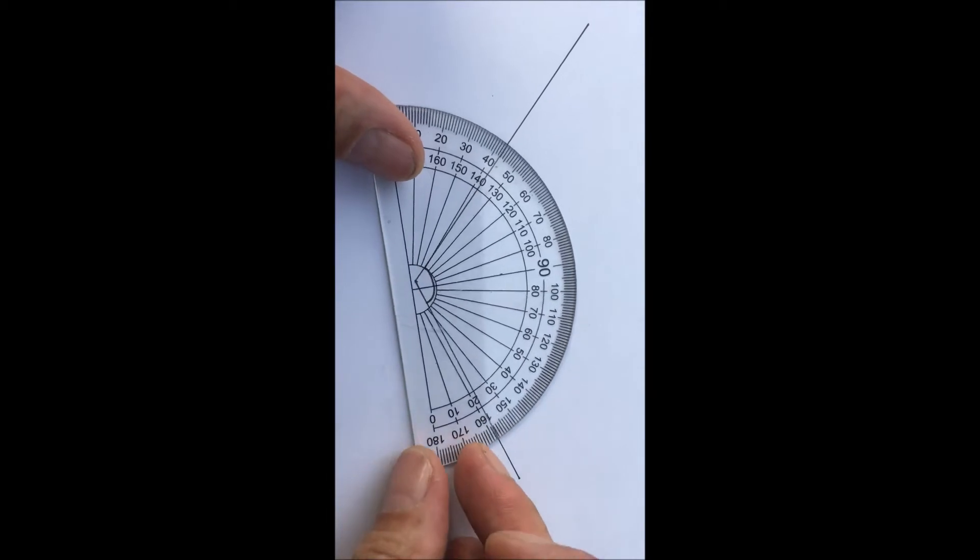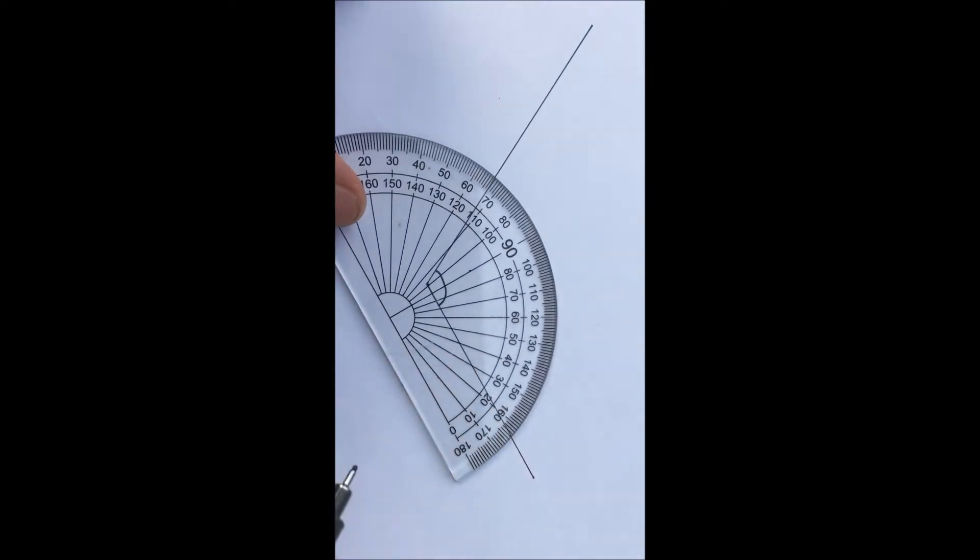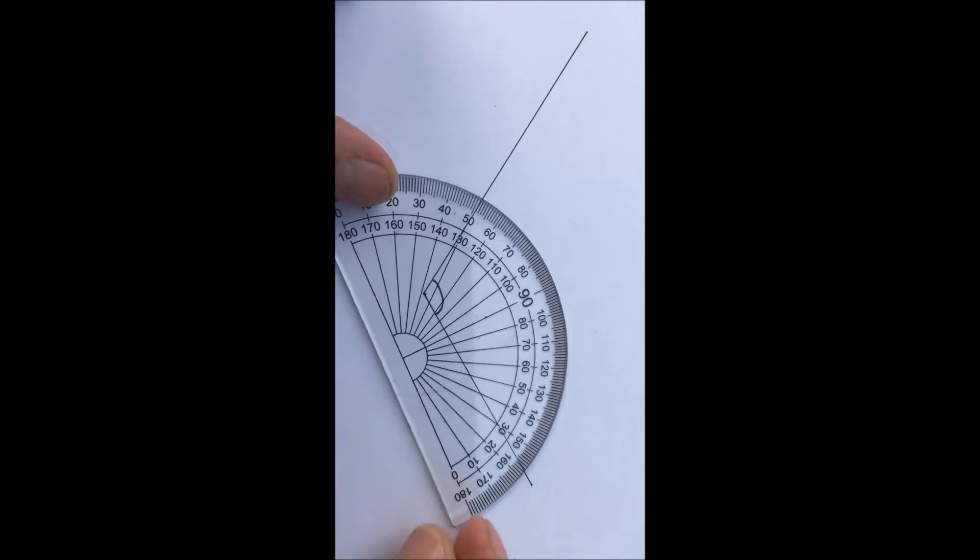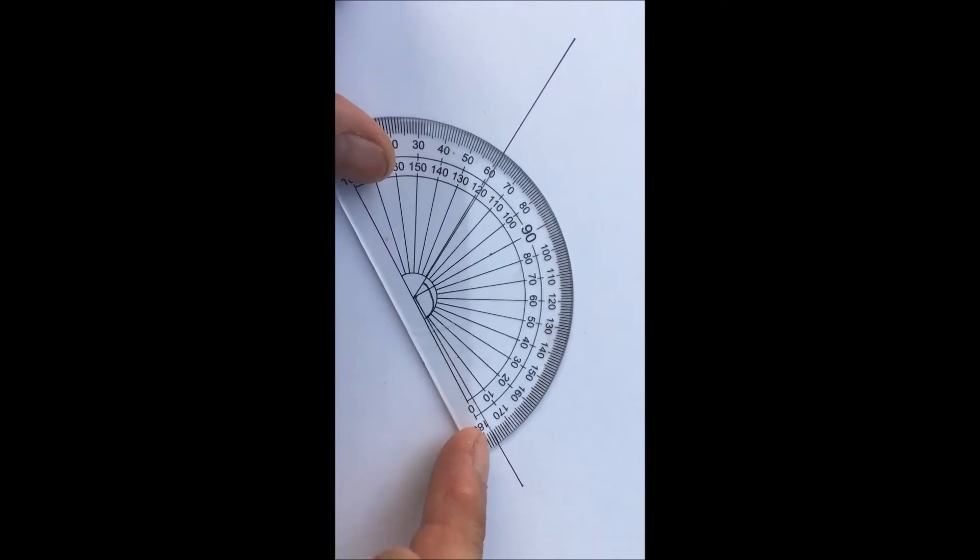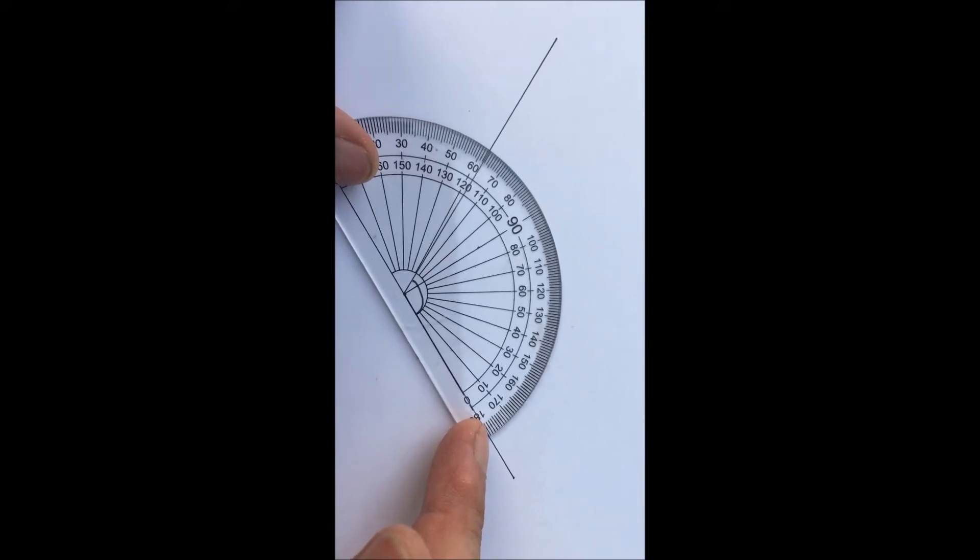You do that and then make sure that one of the arms of the angle is lined up with one of these bottom arms of your protractor. I want to do it like this, take my time, there's no need to rush. Just line it up and now you can see it's smack bang on.